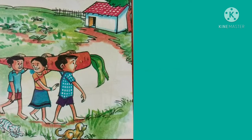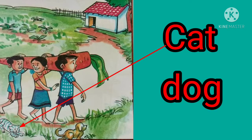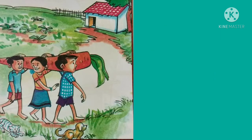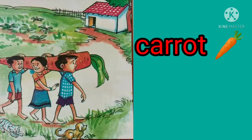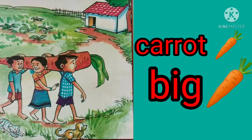What animals do you see in this picture? A cat. A dog. Very good. What are the children carrying on their shoulders? Yes, it's a carrot. Is it a small carrot or a big carrot? It's a big carrot.